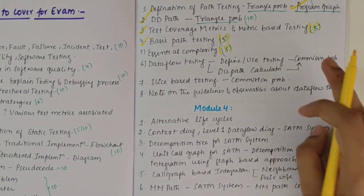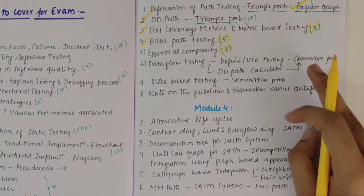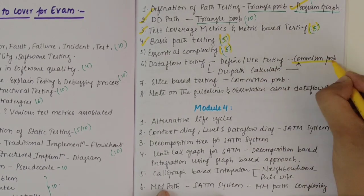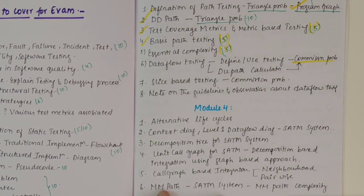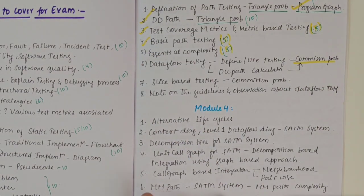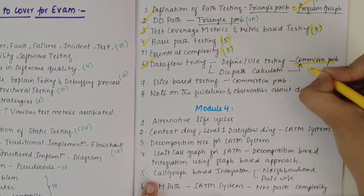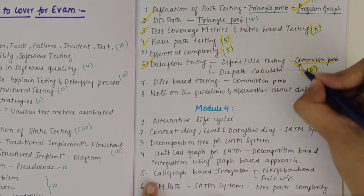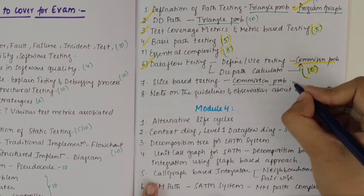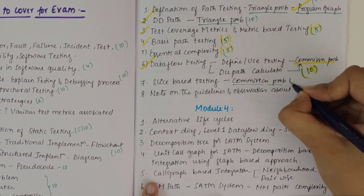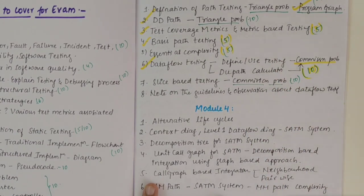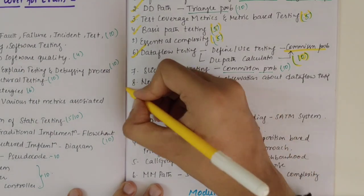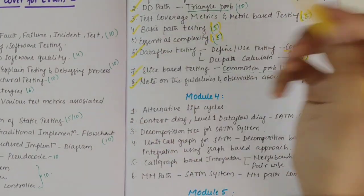Next, data flow testing for the commission problem — we should write the DU path calculation and define-use testing. This is a must question and will be asked for 10 marks. Next we have slice-based testing, again for the commission problem. Out of data flow testing and slice-based testing, one could be asked for 10 marks. Then we should write a note on guidelines and observations about data flow testing, which is a five-mark question.